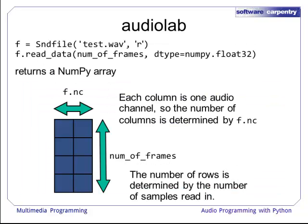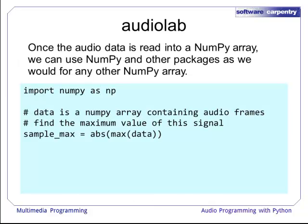When we read data from a Wave file, we create a NumPy array containing the audio samples. The number of rows in that array is determined by the number of samples read in. The number of columns is the number of audio channels in the original audio file — so if it's a mono audio file, there is one channel and one column; if it is a stereo file, there are two audio channels stored in two columns. Once the audio data is read into a NumPy array, we can use NumPy and any other packages as we would for any NumPy array. For instance, to find the maximum value of the signal, we would find the absolute value of the maximum of data.